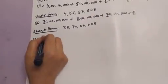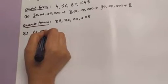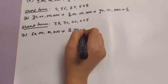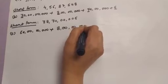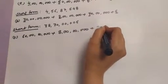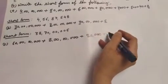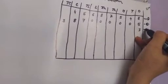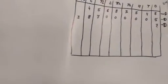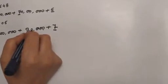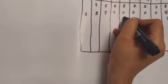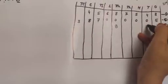Next question. We will write seven in ones space. Count the places: ones, tens, hundred, thousand, ten thousand — so eight in ten thousand. Remaining places we will write zero, as the information is not given.